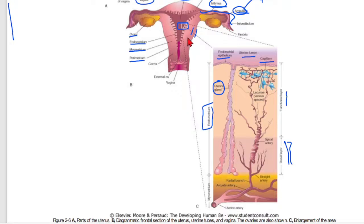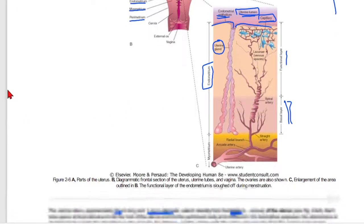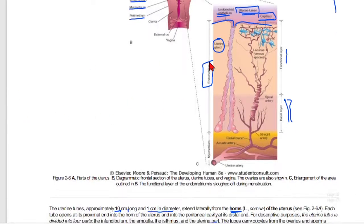Looking at the enlarged view, you can see the perimetrium, myometrium, and endometrium layers. If you zoom into the endometrium, you can see the endometrial epithelium, capillaries, and the uterine lumen.